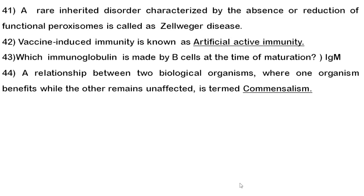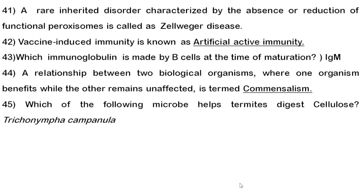Forty-fourth question: the relationship between two biological organisms where one organism benefits while the other remains unaffected is called commensalism. Read the question carefully and know examples of commensalism.